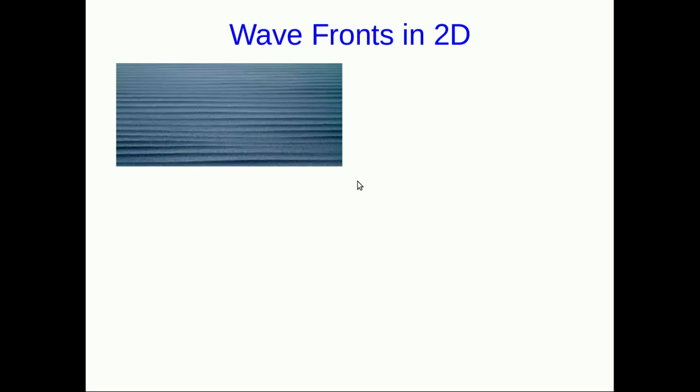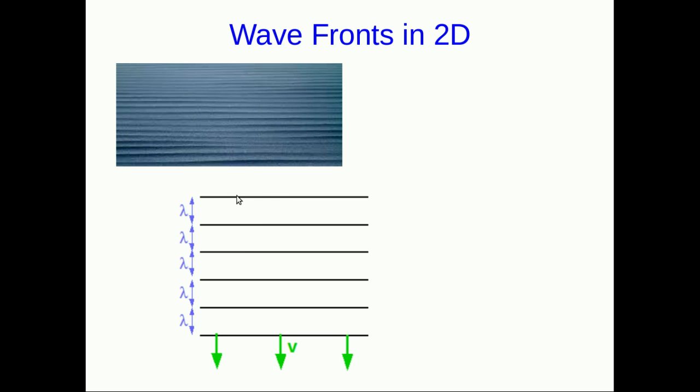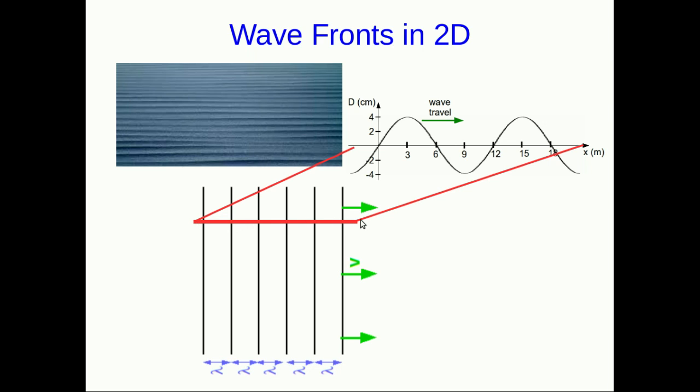To start thinking about waves in two dimensions, think about a picture like this. This is an actual picture of ocean waves. Most of the time ocean waves look messier than this, but someone got this picture of a day where there were nice regular evenly spaced waves coming towards them. We can imagine the view from an airplane looking down and seeing these long straight crests, each separated by the same distance lambda and all traveling this way at a speed v. This is a snapshot, just like a snapshot graph, and these lines which represent crests would be moving along.